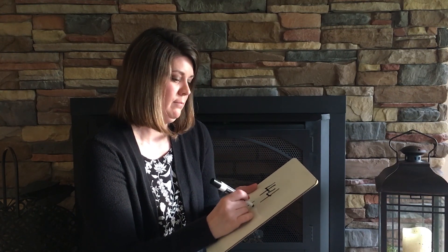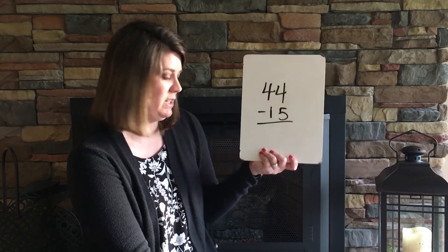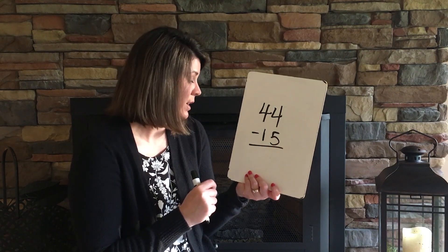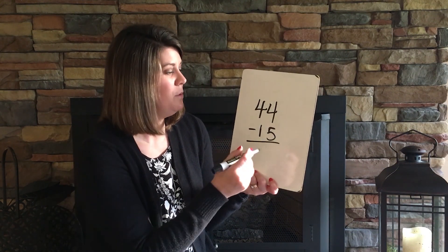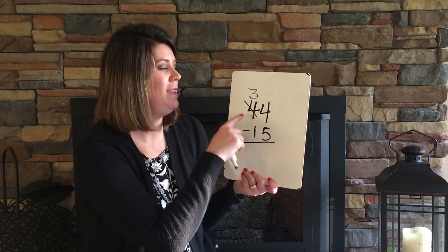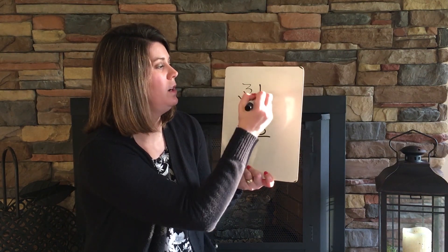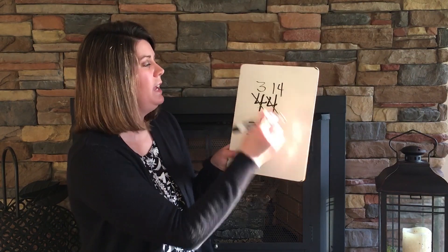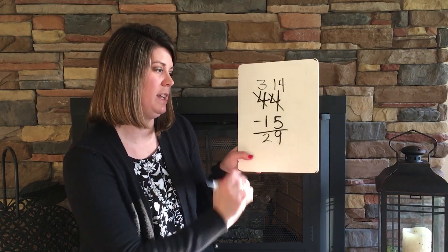Now let's look at 44 minus 15. I look at my 1's place — more on the floor, so go next door and get 10 more. I have 4 tens, take 1, leaving 3. Moving those 10's to the 1's place: 10 plus 4 is 14. I swipe the 5 and count up to 14: 5, 6, 7, 8, 9, 10, 11, 12, 13, 14 — that's 9. Then 3 minus 1 leaves 2. So 44 minus 15 equals 29.